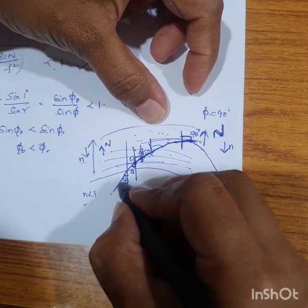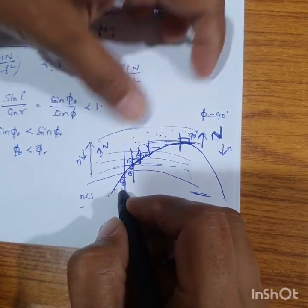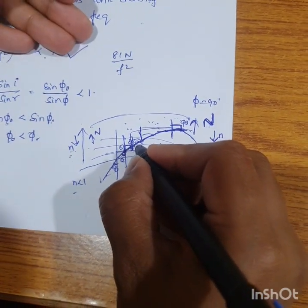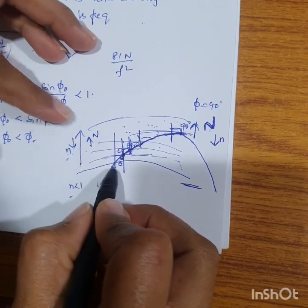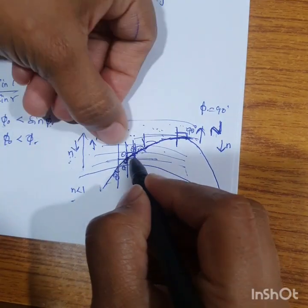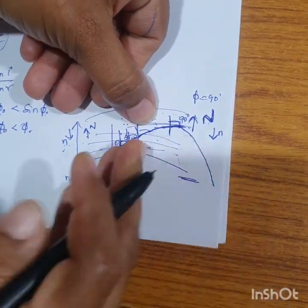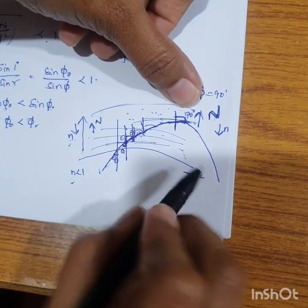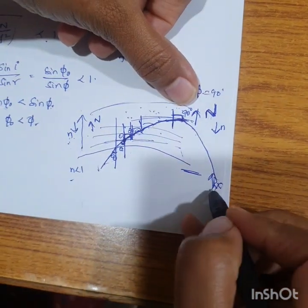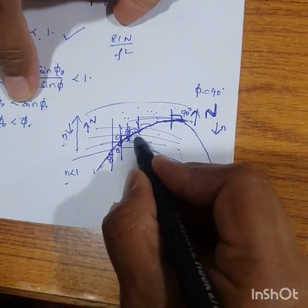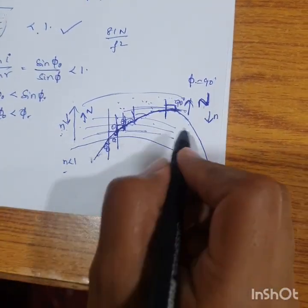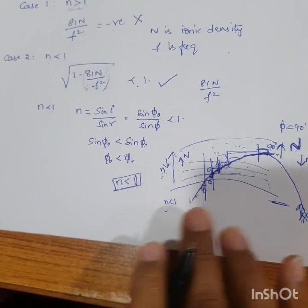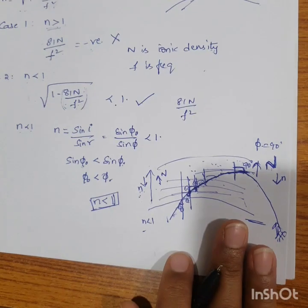At the point where the refracted angle becomes 90 degrees, the wave turns downward and comes back to the earth. This is the mechanism of ray bending in the ionosphere: as height increases, the refractive index decreases, the angle of incidence becomes smaller, and the refracted angle grows until it reaches 90 degrees. The wave completely bends and returns to earth, allowing a receiving station on the other side to receive the signal. This is how sky wave propagation comes into existence.